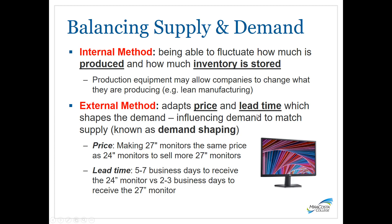By adjusting price and lead time, companies try to influence demand to match supply — this is known as demand shaping. For example, selling a 27-inch monitor at the same price as a 24-inch monitor creates more demand for the larger one. Similarly, offering a shorter lead time of two to three business days for the 27-inch monitor versus five to seven days for the 24-inch model can influence a customer's decision toward the larger product.